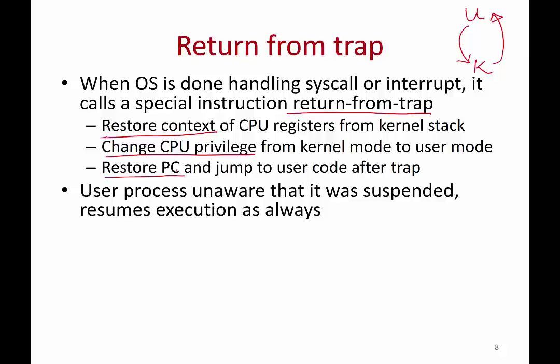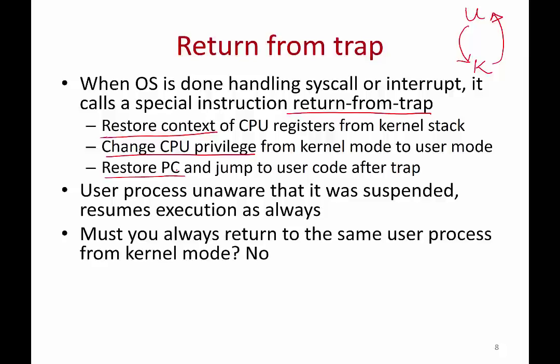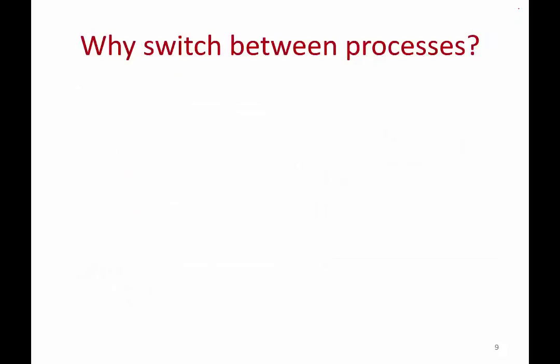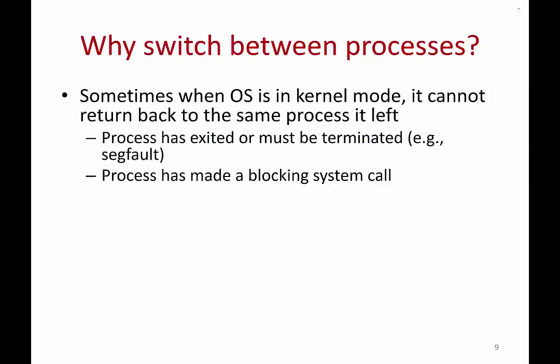Note that resuming may not happen immediately. If you made a blocking system call, you can resume a little bit later; if you made a non-blocking system call, you can resume immediately. Now the question is: once you're going back from kernel mode to user mode, do you have to go back to the same process or can you go to a different process? It's not necessary to go back to the same process. Before calling return from trap, the operating system checks whether it should go back to the same process or switch to some other process.